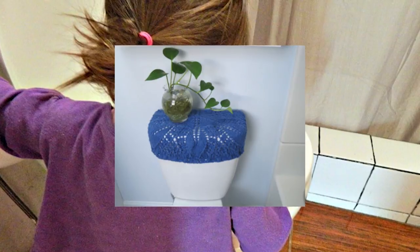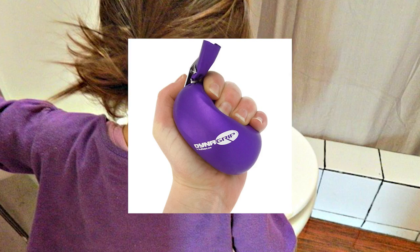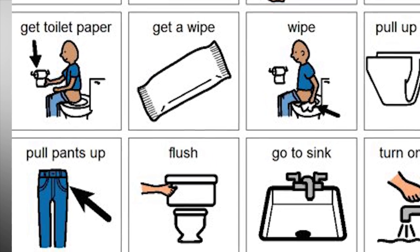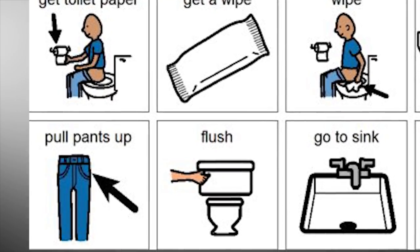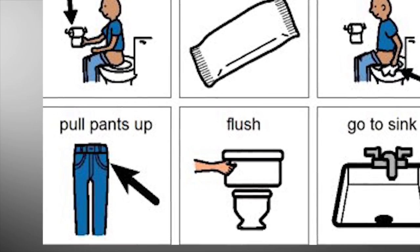When a child is overly interested in flushing, consider covering the toilet handle to remove it from sight, or give them something to hold and manipulate to distract them from the toilet handle. Providing a visual sequence to show when to flush, after replacing clothing for example, may also alleviate some stress because they will know when they will have a chance to flush the toilet.